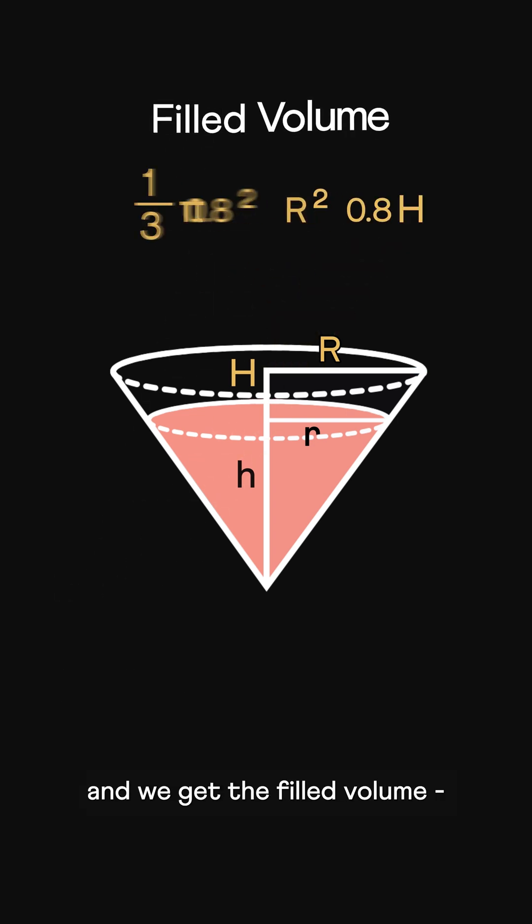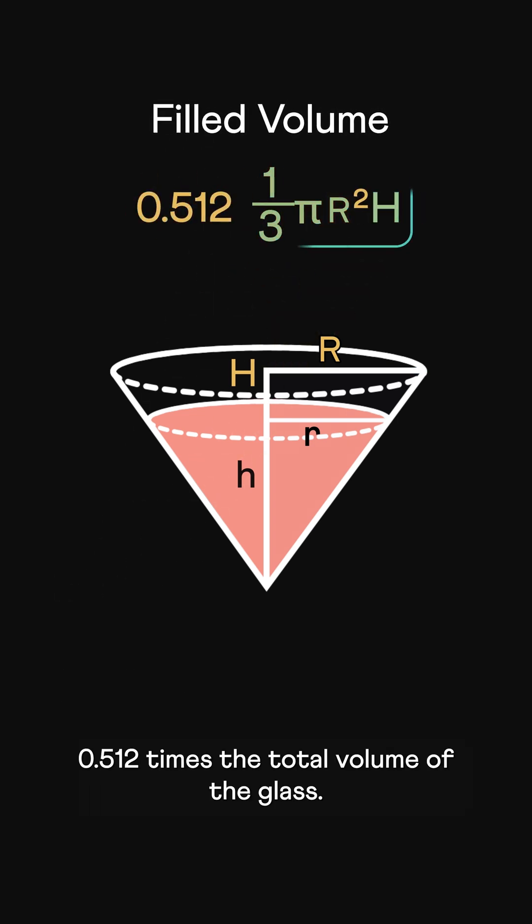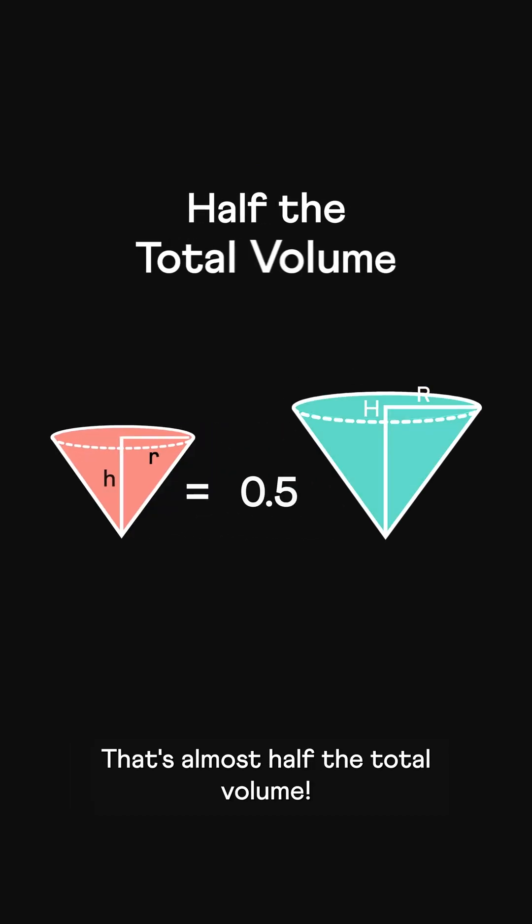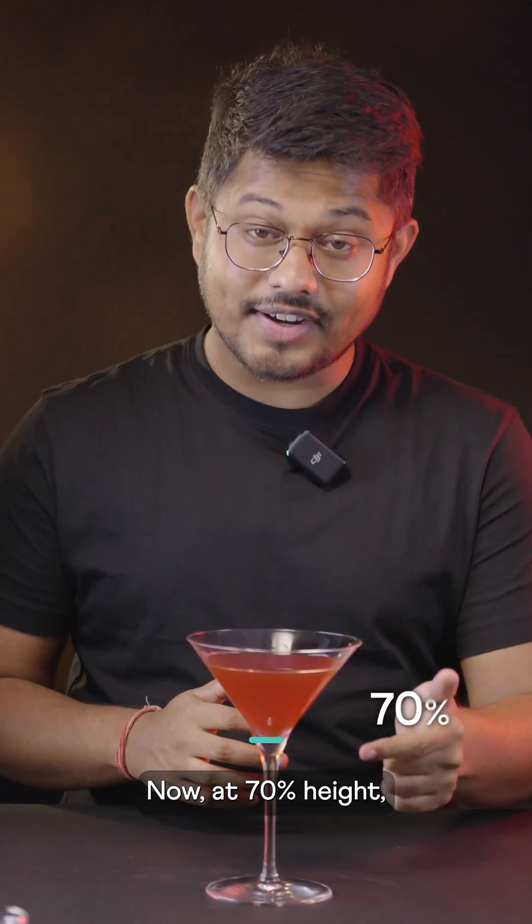Plug in the values and we get the filled volume 0.512 times the total volume of the glass. That's almost half the total volume. Now at 70% height, how much of the glass will be filled?